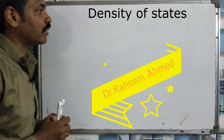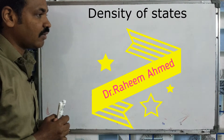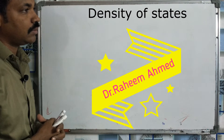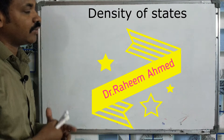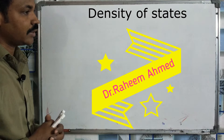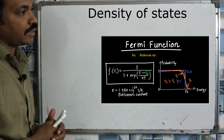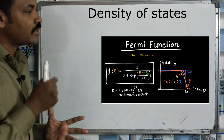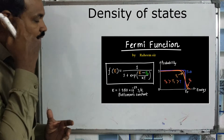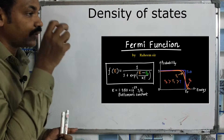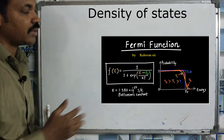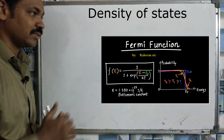Good morning, we are going to talk about density of states. The aim of the Fermi function is the probability of finding electrons at an energy level — the probability of arrangement of electrons. This is the Fermi function.